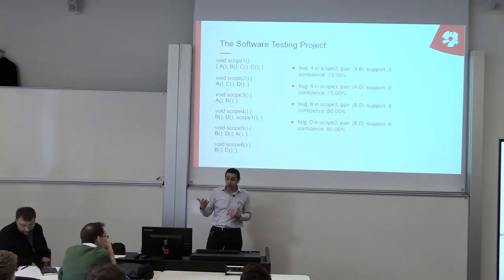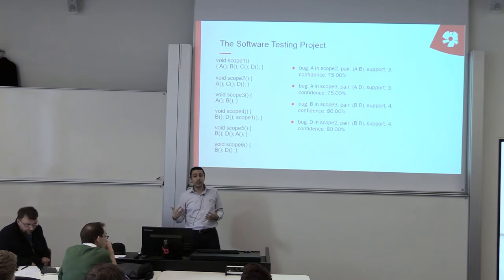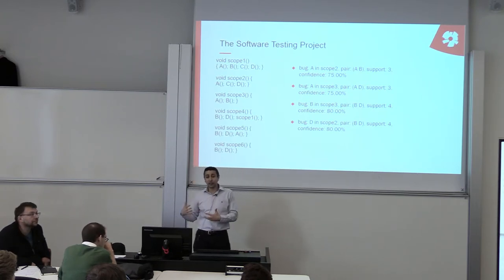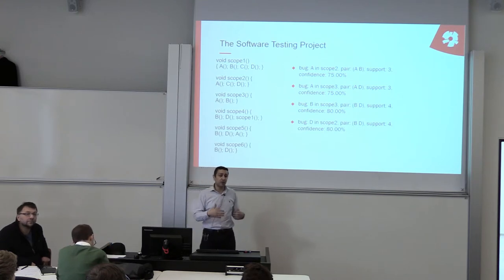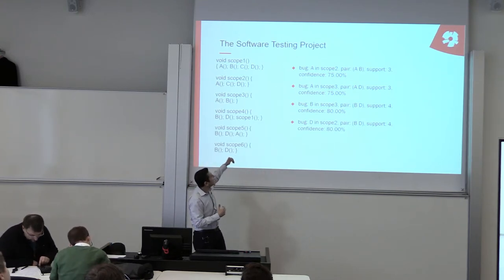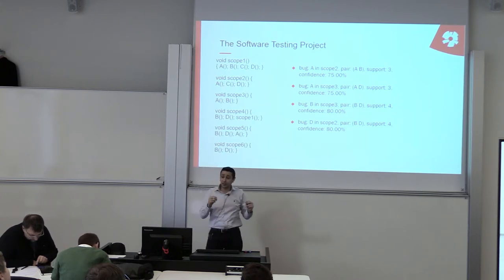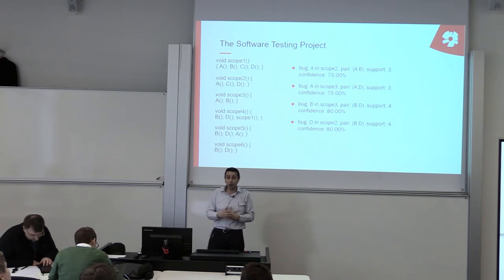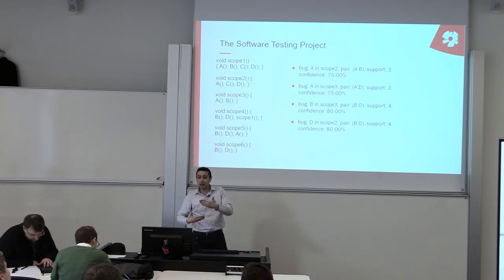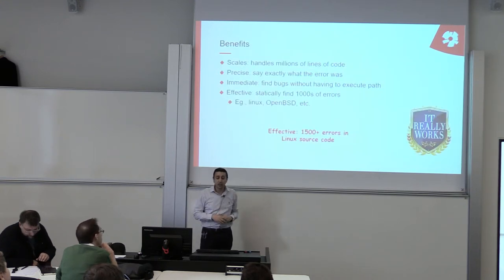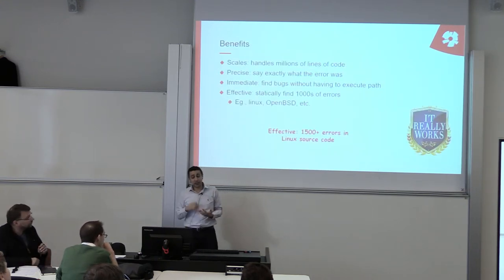In the software testing project, students compile the code, generate bytecode, and based on that generate call graphs. Based on these call graphs, which look similar to what's shown here, they can find patterns. Based on these patterns they can find evidence and support, which can rank the errors and bugs, and based on that we can say this is most likely a bug.